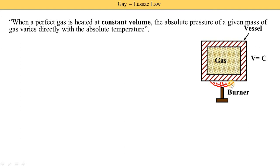When we remove the heat at constant volume, both are decreased — pressure is decreased and temperature is also decreased. We can write this relation as: pressure is directly proportional to temperature. If pressure rises, temperature also rises. If pressure is reduced, temperature is also reduced.